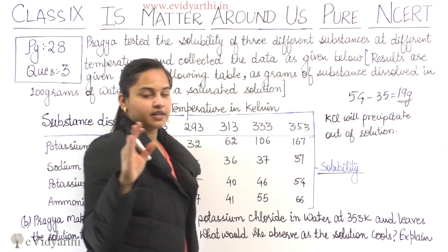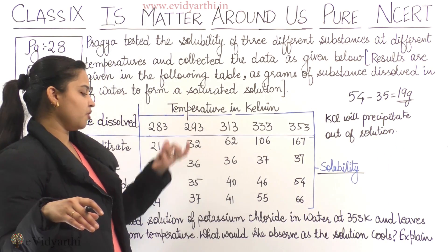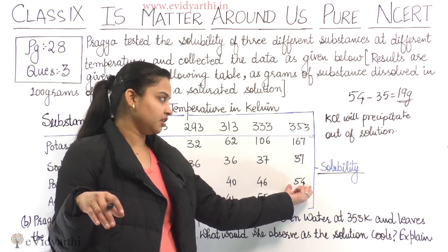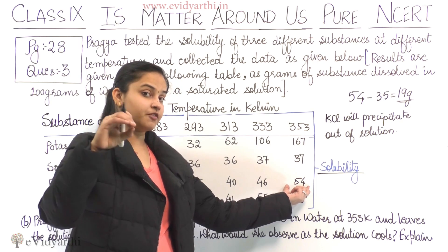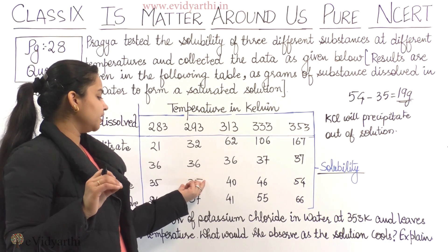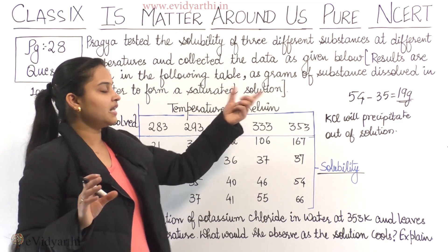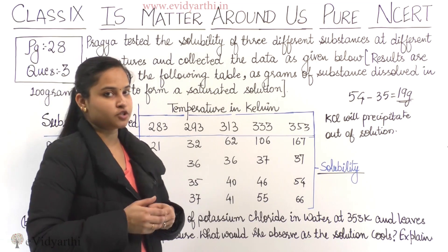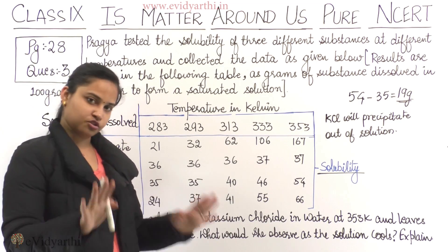Room temperature is approximately 293 Kelvin (about 25°C). At 293 Kelvin, only 35 grams of KCl is needed for a saturated solution, but we dissolved 54 grams at 353 Kelvin. Therefore, 19 grams of KCl will precipitate out of the solution, while 35 grams remains dissolved.